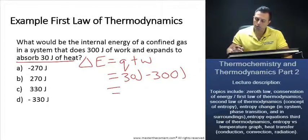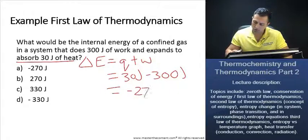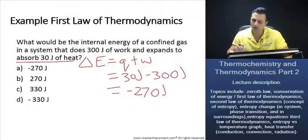Wonderful. Once you go ahead and you equate this, you'll end up with a value of negative 270 joules. Therefore, our system has lost 270 joules of energy.